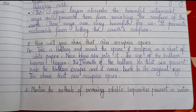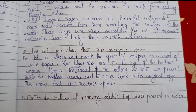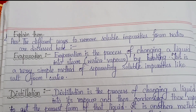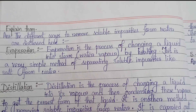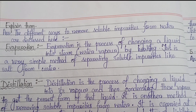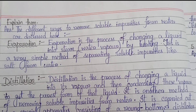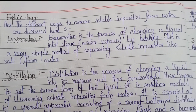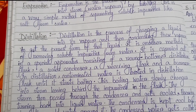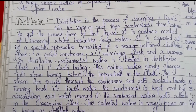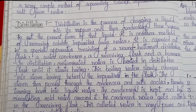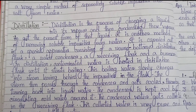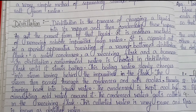Number 3: mention the methods of removing soluble impurities present in water and explain them. The different ways to remove soluble impurities from water are discussed here. Evaporation: evaporation is the process of changing a liquid into steam, that means water vapor, by heating. This is a very simple method of separating soluble impurities like salt from water. Distillation is the process of changing a liquid into its vapor and then condensing this vapor to get the purest form of the liquid.